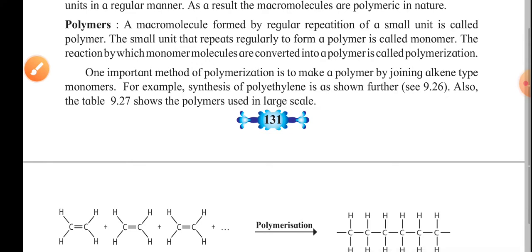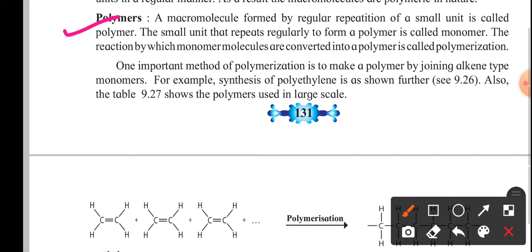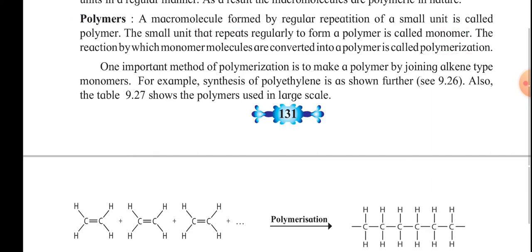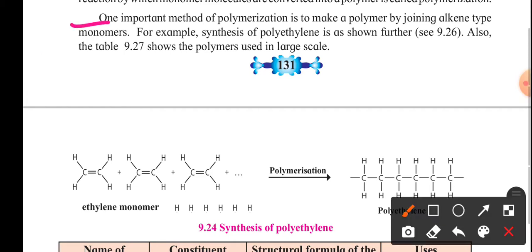A macromolecule formed by regular repetition of a small unit is called a polymer. The small unit that repeats regularly to form a polymer is called a monomer. The reaction by which monomer molecules are converted into a polymer is called polymerization. One important method of polymerization is to make a polymer by joining alkene-type monomers. For example, the synthesis of polyethylene is formed by joining ethylene monomers together.